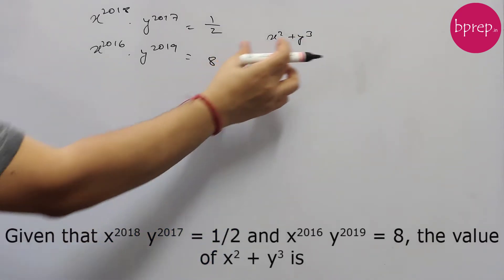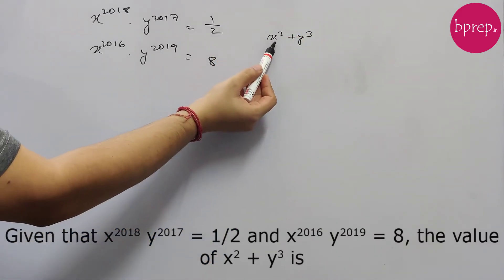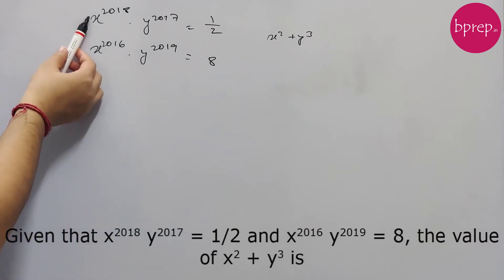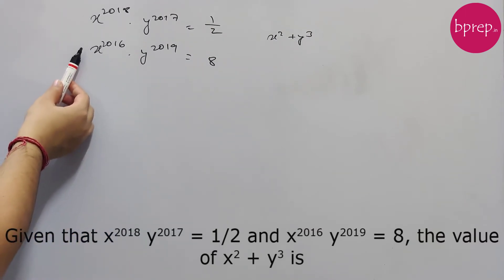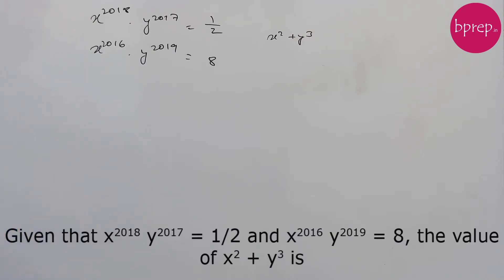To get the value of x squared plus y cubed, we need to find out the values of x and y. We have two expressions — two equations and two unknowns — so we can get the values of x and y from here. But because the powers are very large, it seems like it could take time solving this directly.